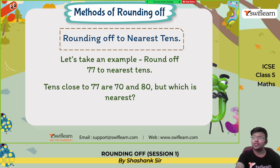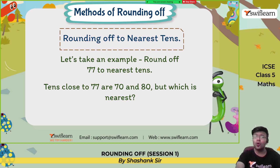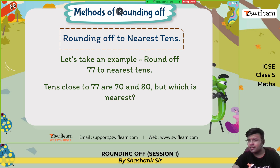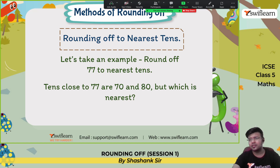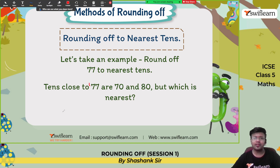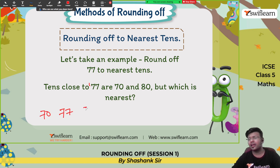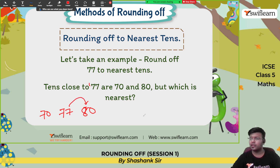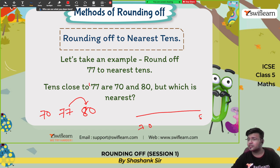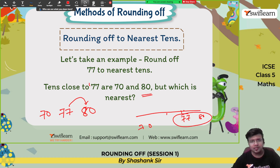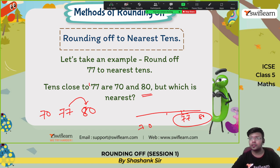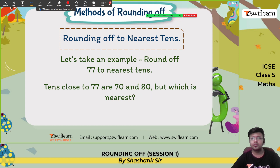Methods of rounding off — to the nearest 10: let's take the example of rounding off 77 to the nearest 10. Look at the tables of 10 near to 77: 10 sevens are 70, and 10 eights are 80. So 77 is between 70 and 80. If you draw a number line, 70 is here, 80 is here, and the midpoint is 75. Since 77 is more close to 80, the answer is 80.